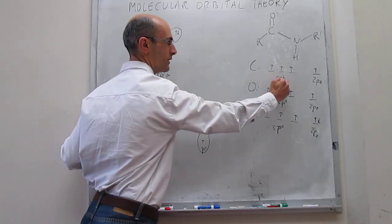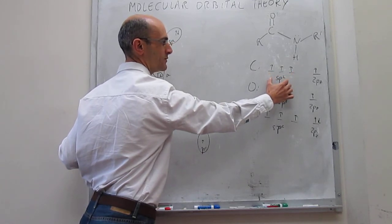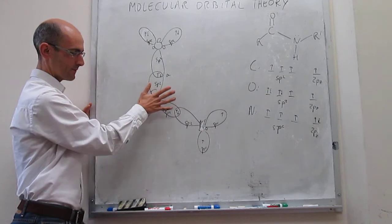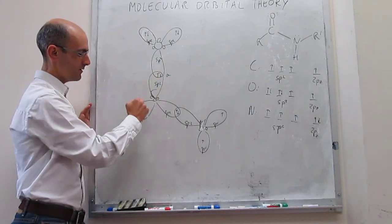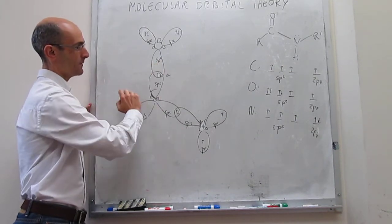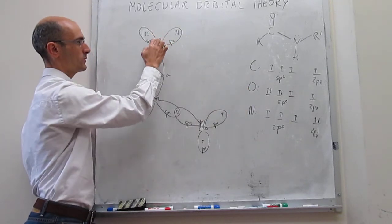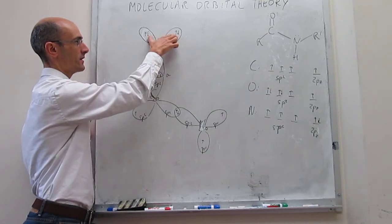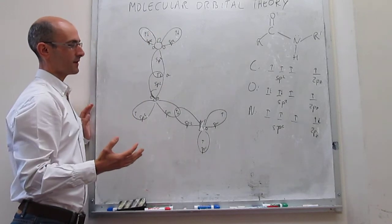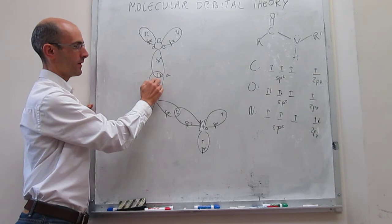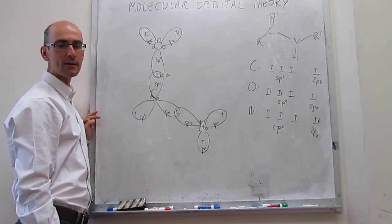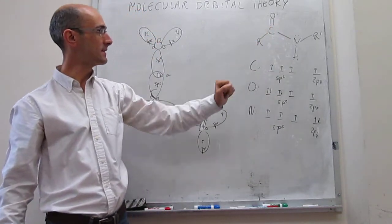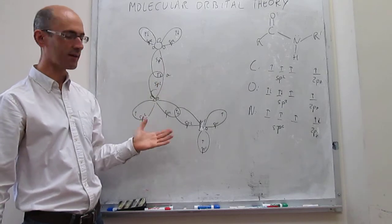Looking at carbon's sigma structure, the three sp2 hybrid orbitals are in this plane, 120 degrees from each other, each with one electron. For oxygen, there are also three sp2 hybrid orbitals at 120 degrees — one singly occupied and two doubly occupied (lone pairs). Because the sp2 of carbon has one electron and the singly occupied sp2 of oxygen also has one electron, they can form a sigma overlap, explaining the C–O bond.